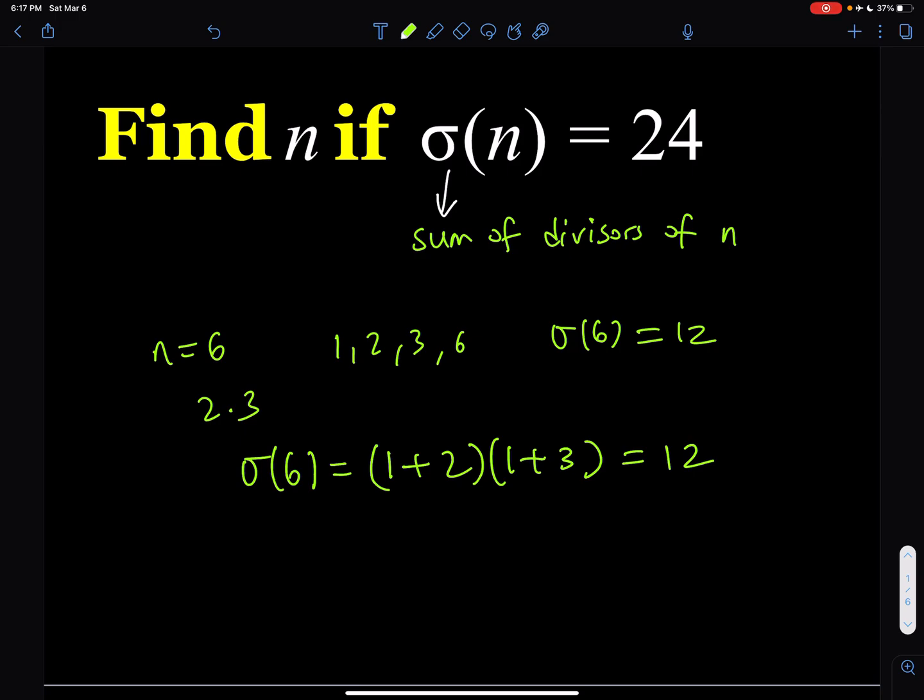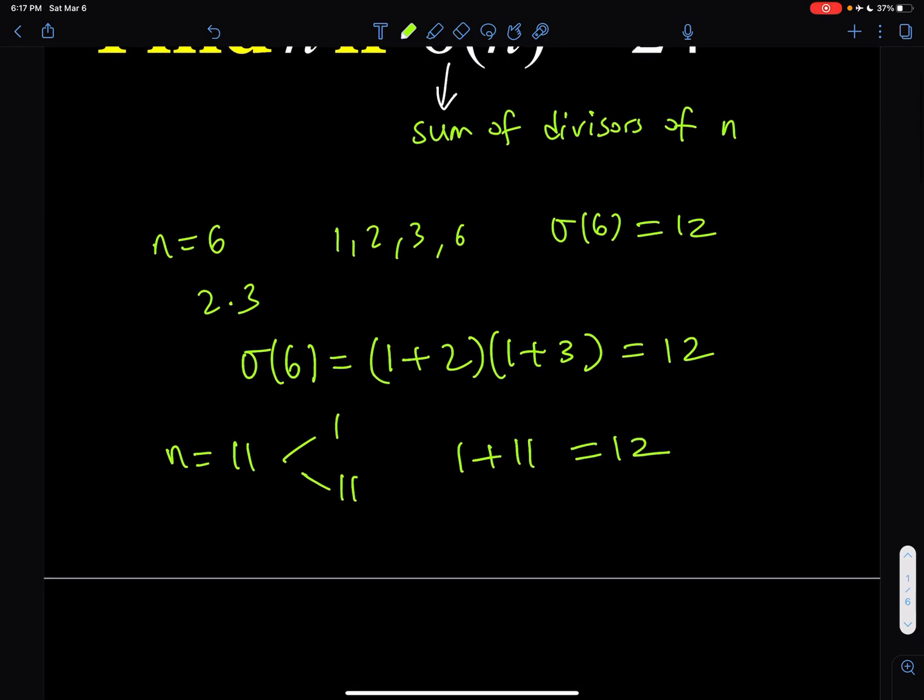One thing to notice, though, what if n is a prime number? So if n is a prime number, like let's say n is equal to 11, what are divisors of 11? Only 2: 1 and 11. So their sum is going to be 1 plus 11, which is 12. So that's an interesting fact as well.